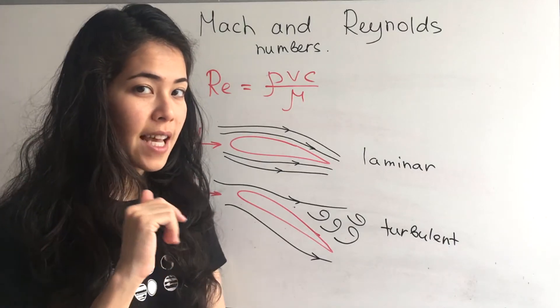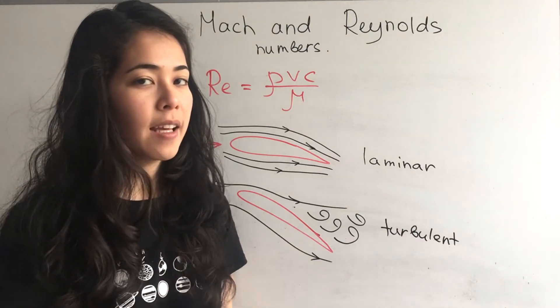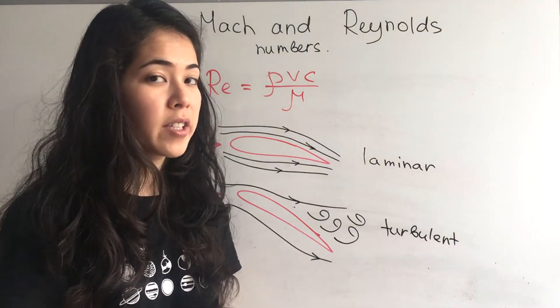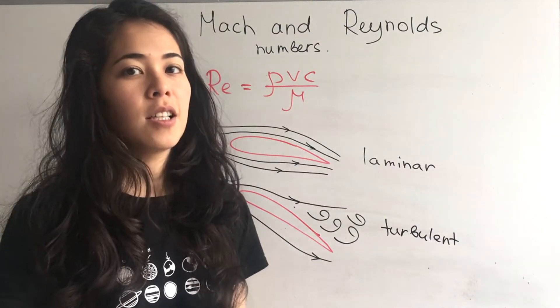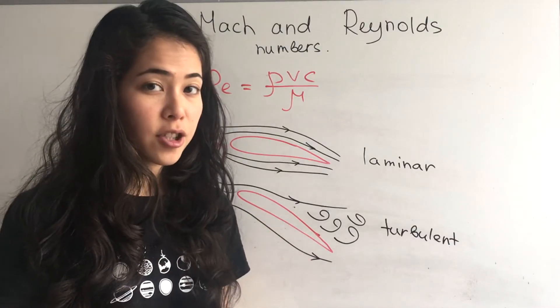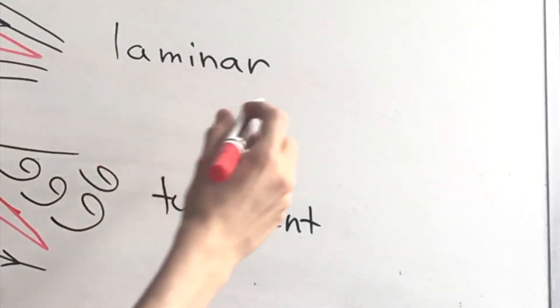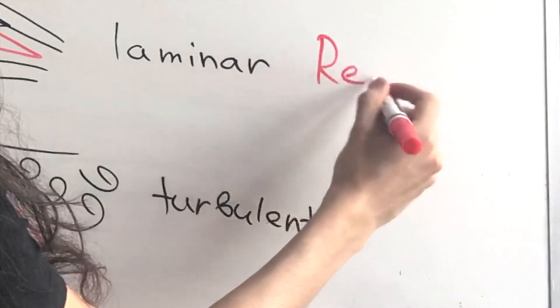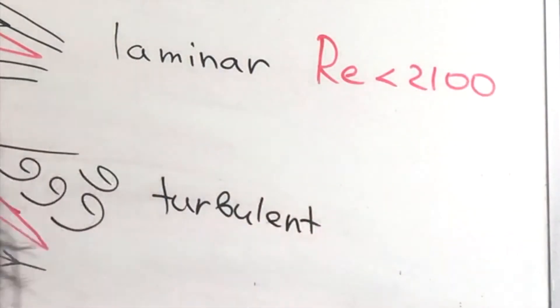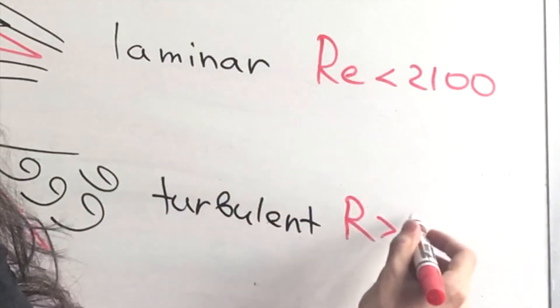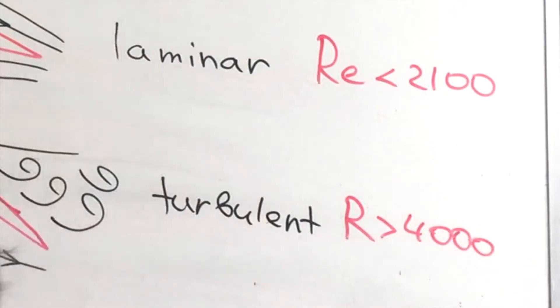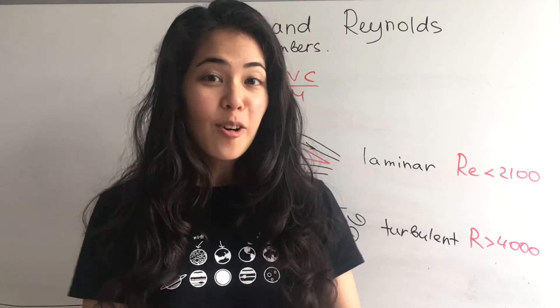But what are the borders at which that happens? Remember with Mach number we have less than 1 or greater than 1 or greater than 5. With Reynolds numbers it's going to be a little bit different. Usually the laminar flow happens at Reynolds numbers less than 2,100. And turbulent flows start at 4,000. And remember there's no units. Reynolds and Mach numbers are unitless. So don't write something here by mistake.